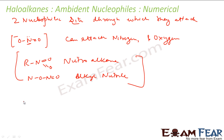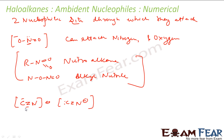Another example of an ambident nucleophile is CN⁻. If you draw the resonating structure, CN⁻ can attack from both carbon and nitrogen. So ambident nucleophiles are those which have two nucleophilic centers and can attack from either side.